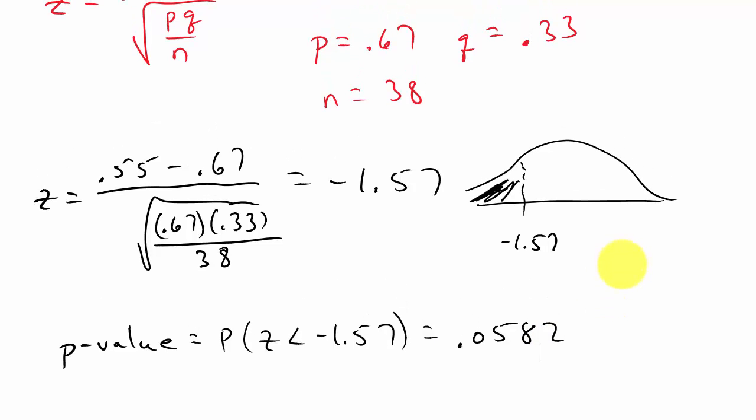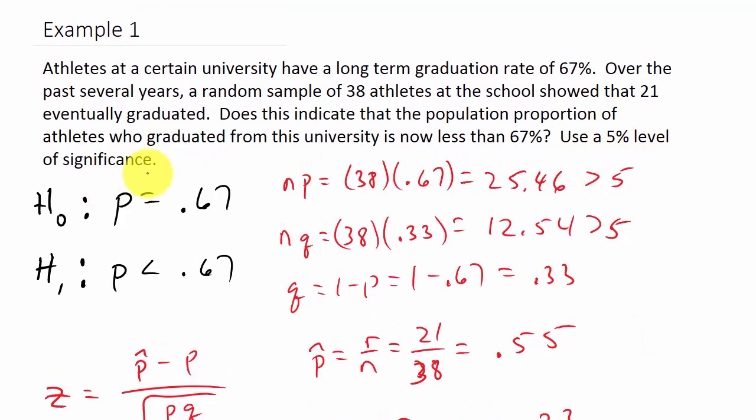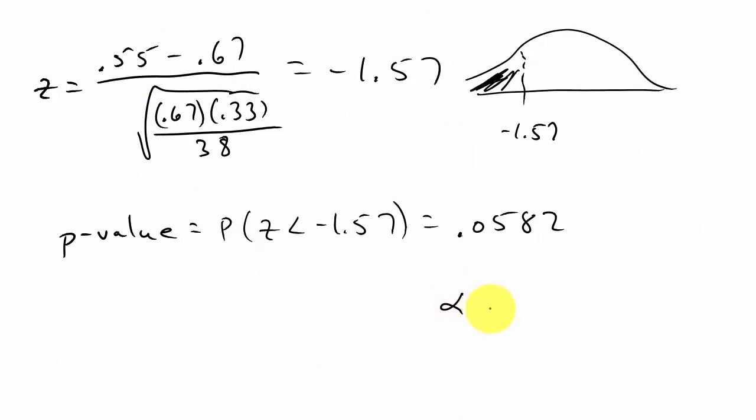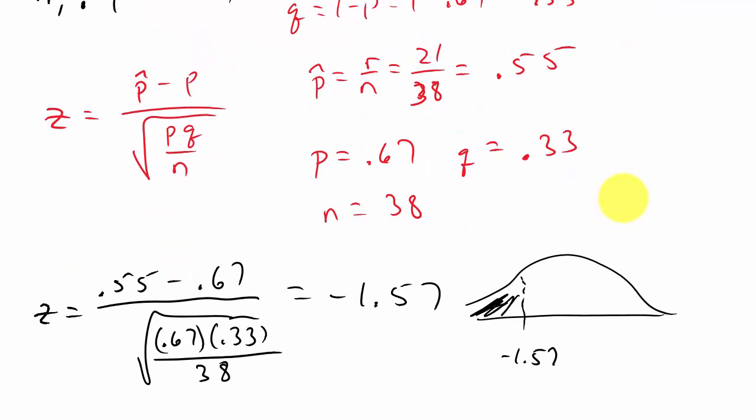Alright, now what are we testing this against? Well, let's look. Use a 5% level of significance, so alpha is 0.05. And we can see that our P value is greater than alpha, because alpha is 0.05, and this value is larger than that. So we will fail to reject H naught. We fail to reject the null hypothesis.